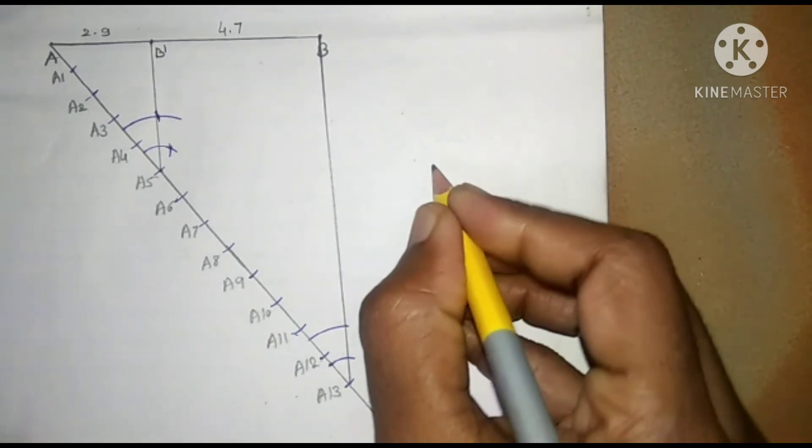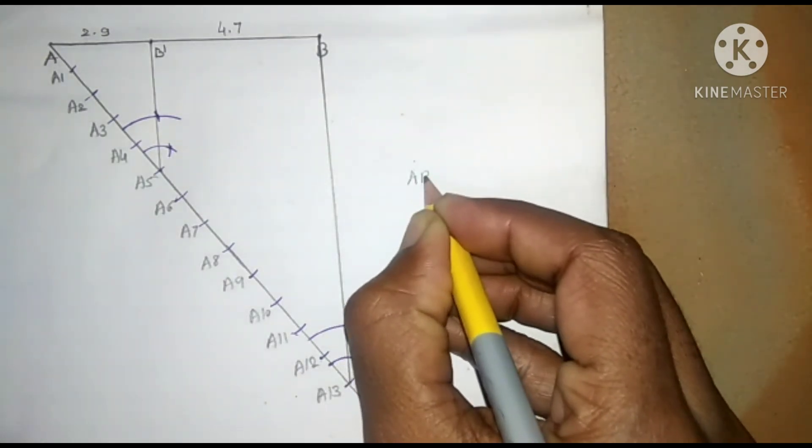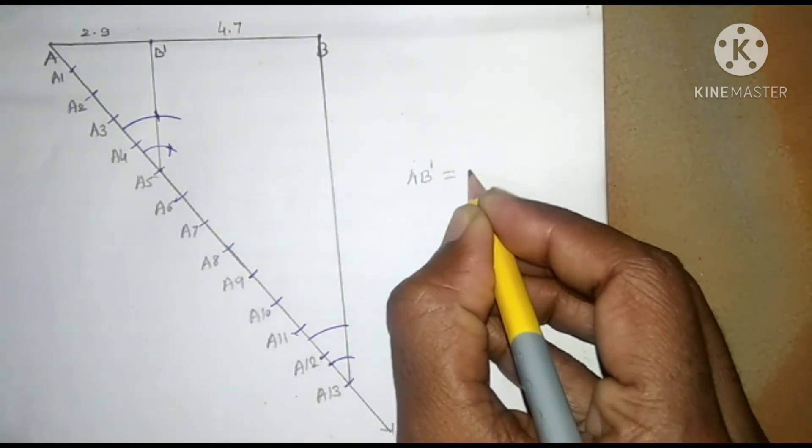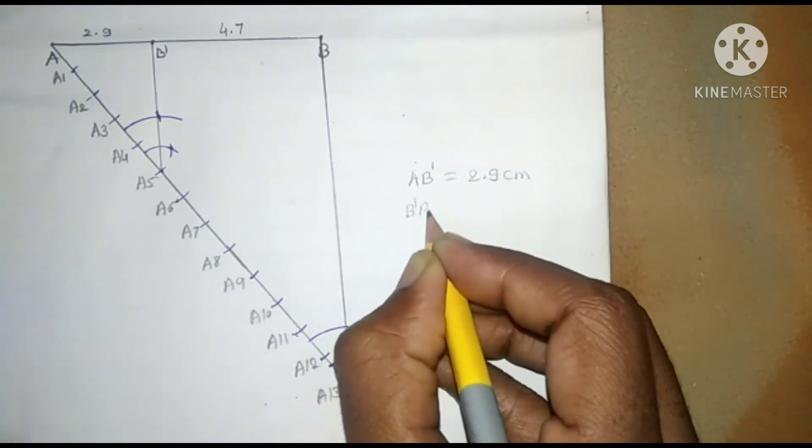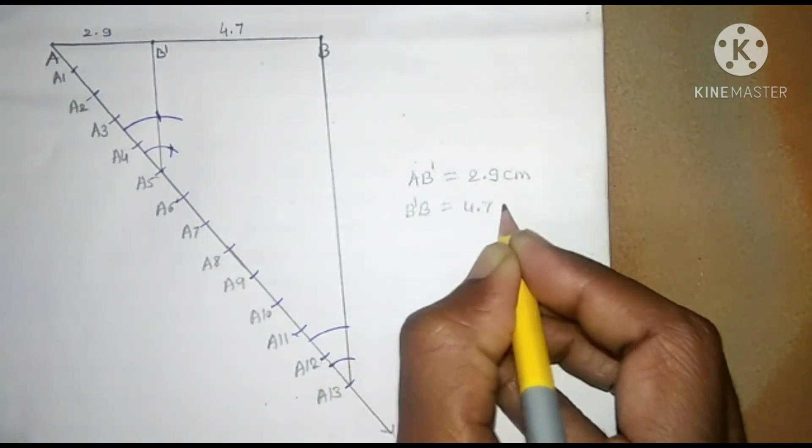Write these measurements separately. AB' is 2.9 cm and B'B is 4.7 cm.